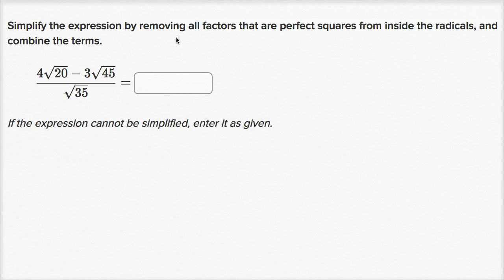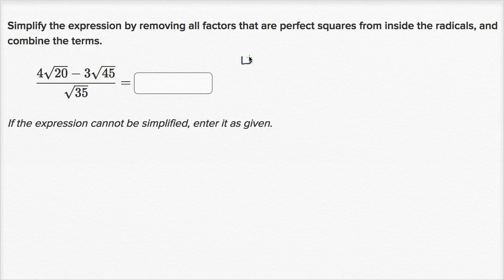We're asked to simplify the expression by removing all factors that are perfect squares from inside the radicals and combining the terms. Let's see if we can do it — pause the video and give it a go before we do it together. So let's see how we can rewrite these radicals. Four times the square root of 20 is the same thing as four times the square root of four times the square root of five, because 20 is the same thing as four times five.